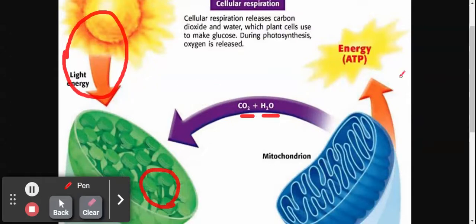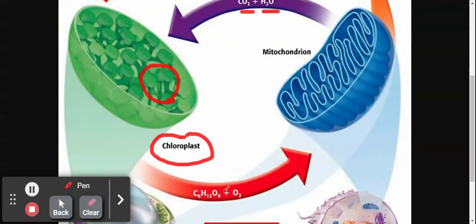And they give off glucose and oxygen. Now animal cells, here's the glucose, here's the oxygen. Animal cells in the mitochondria take in glucose and oxygen.